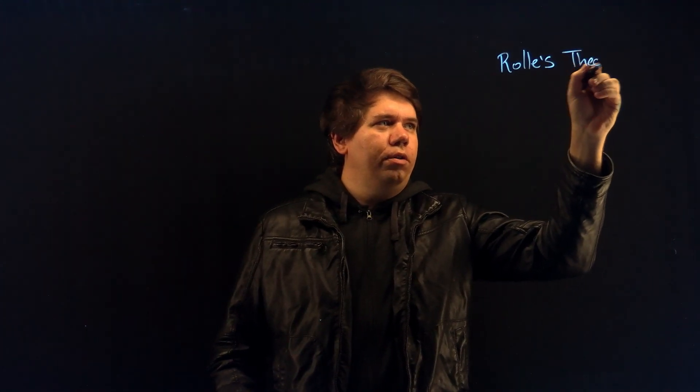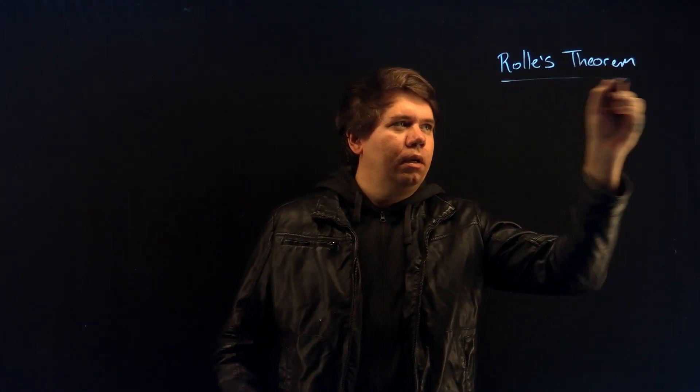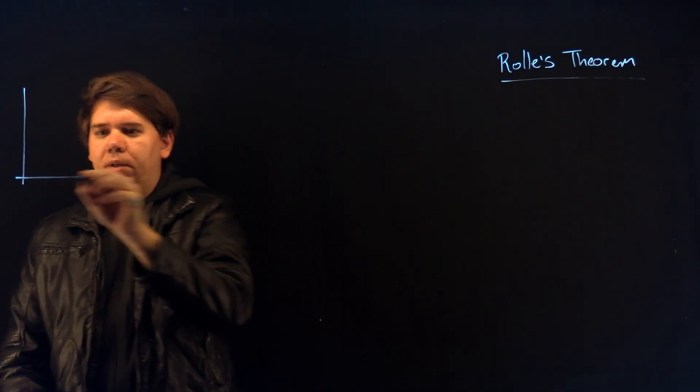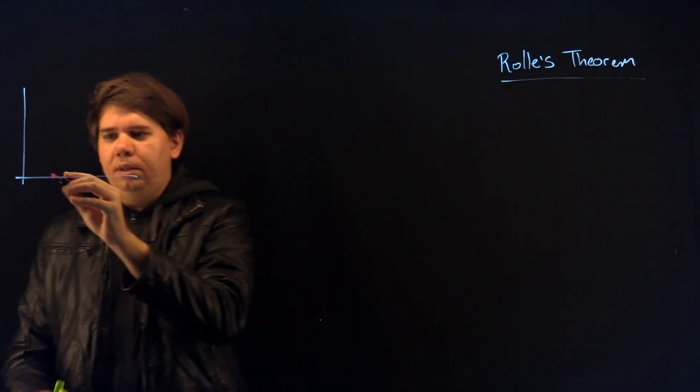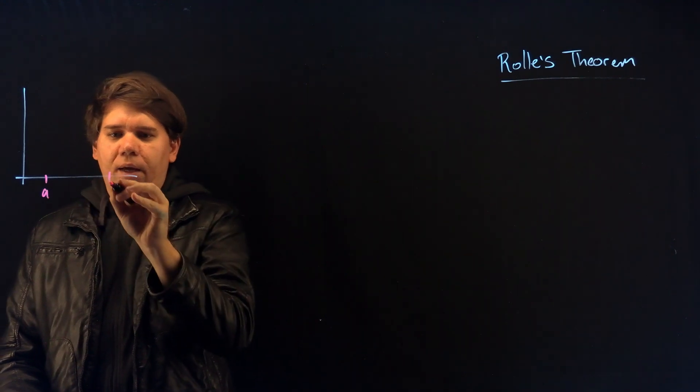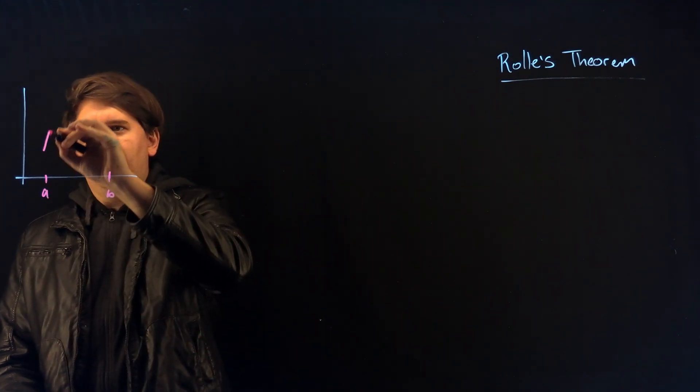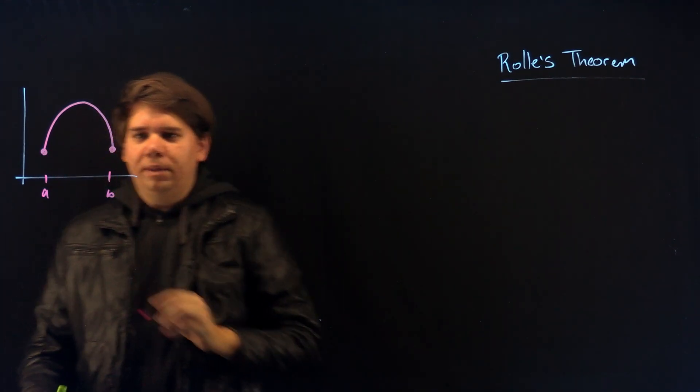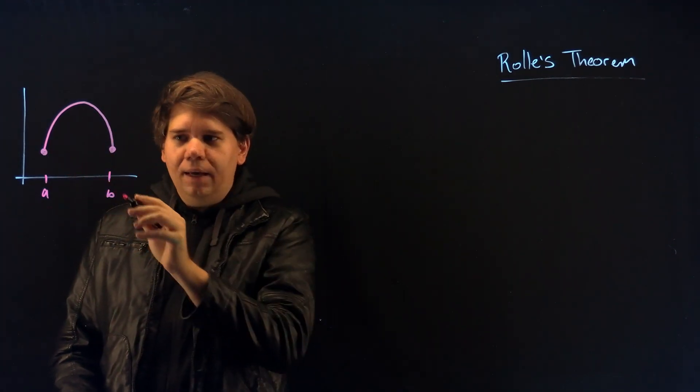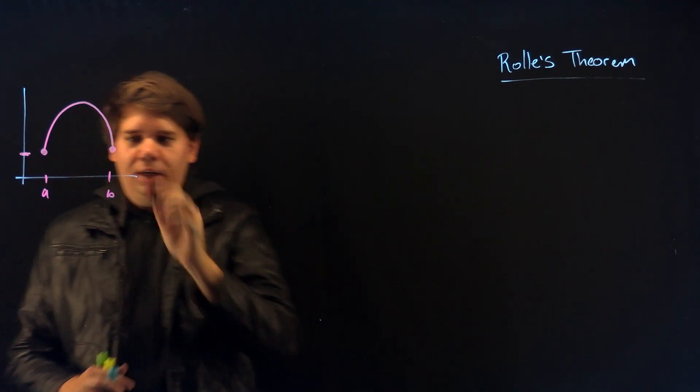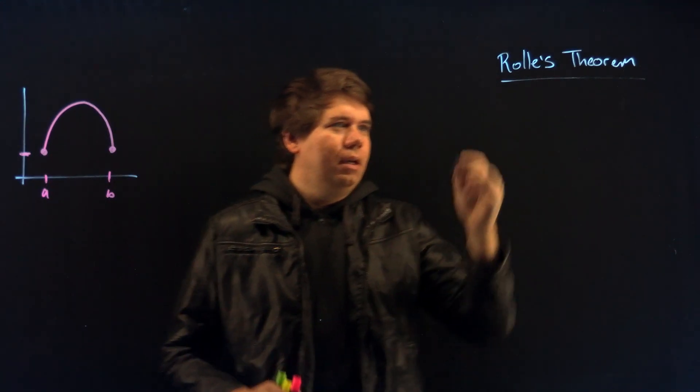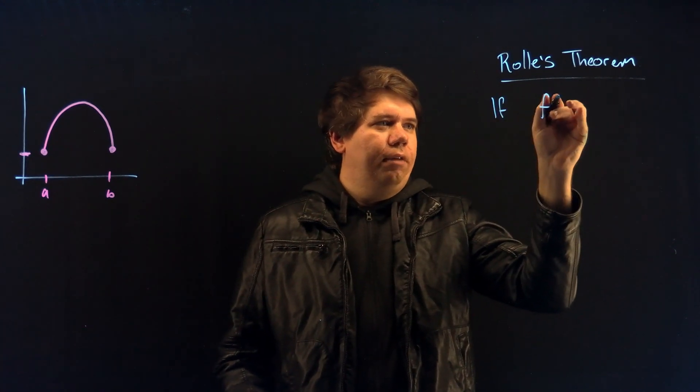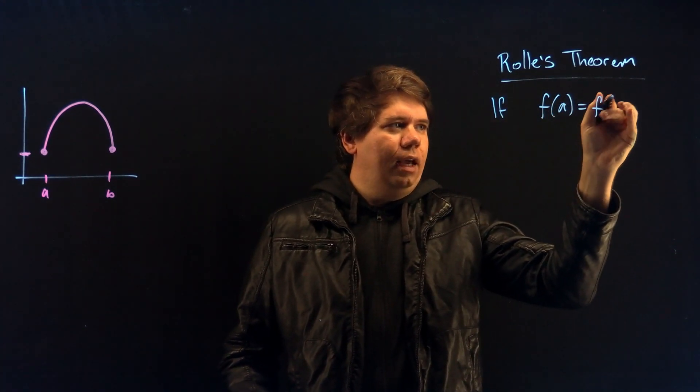In this video we are going to discuss Rolle's theorem. So Rolle's theorem imagines some function between x values a and b. Here's some function between x values a and b where we're going to need the premise that f of a and f of b is the same height. The function at a is equal to the function at b. That is f of a equals f of b.